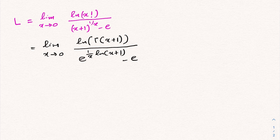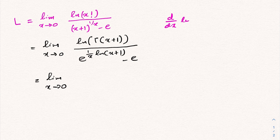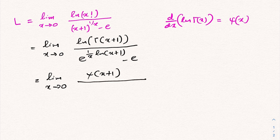If we plug in 0 we get an indeterminate form, so let's apply L'Hôpital's rule. The limit as x approaches 0: the derivative of natural log of gamma of x is the digamma function, so in the numerator we have digamma of x plus 1. For the denominator, differentiating e to the function gives e to the (1 over x) times natural log of (x plus 1), multiplied by the derivative of natural log of (x plus 1) over x, applying the quotient rule.